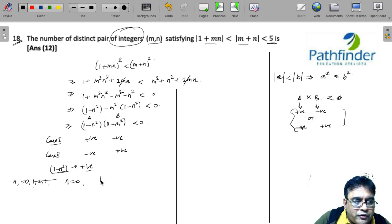If n=0, we have 1-m² < 0. This will be true for any value of m greater than 1. So m can be ±1, ±2, ±3, ±4 and so on till infinite.